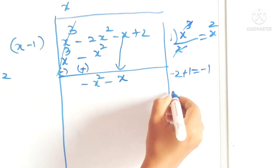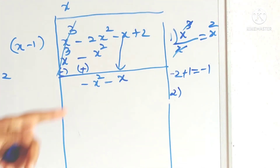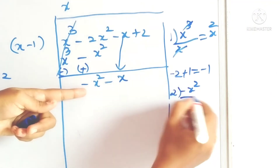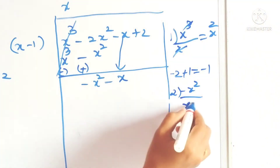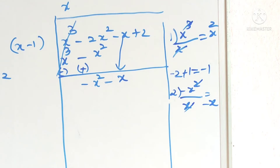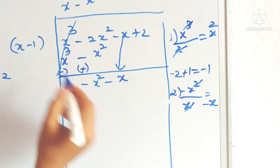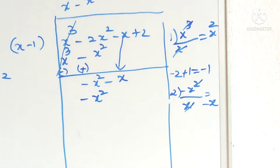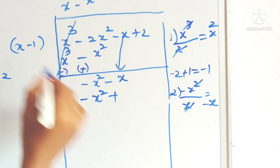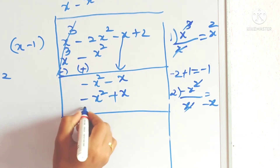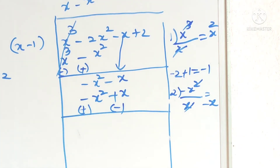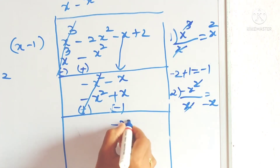For the second term in the quotient, again take the first term: minus x square, and the first term in the divisor. The x terms cancel, leaving minus x. Write minus x in the quotient. x into minus x is minus x square, minus into minus plus, 1 into x is x. Again change the signs — opposite symbols. Minus x and plus cancel; both remaining terms have minus, so it will be minus 2x.